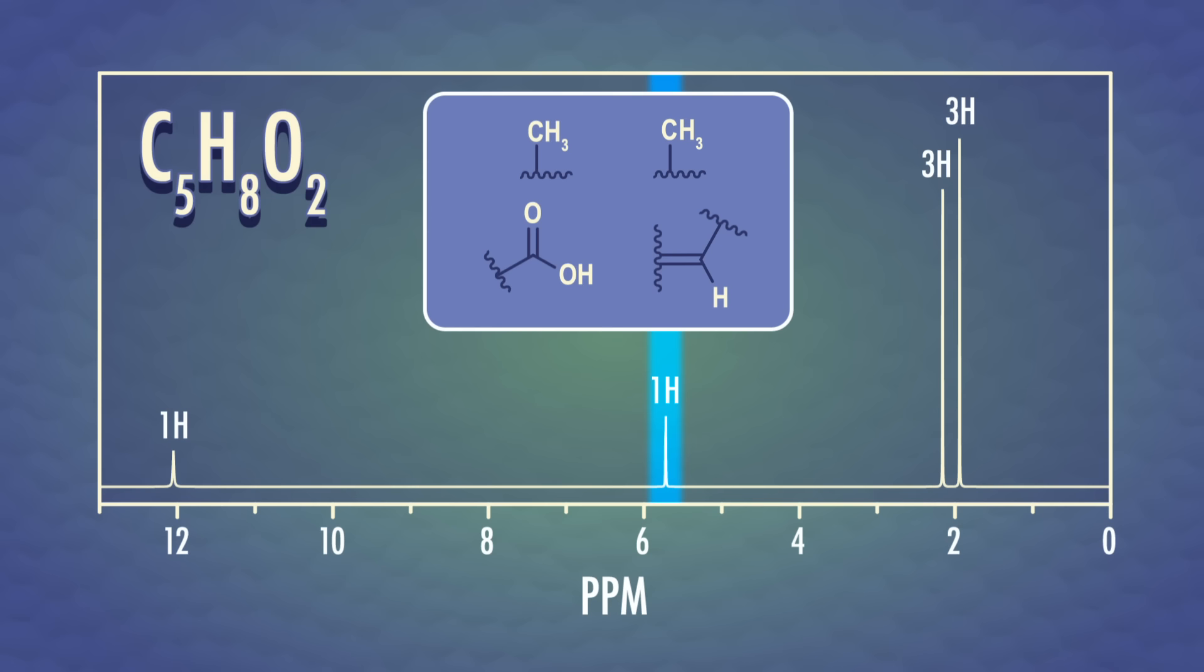To start, let's put the two CH3 groups on different sides of the alkene. Wait a second, though. With this structure, the methyl group is next to a carbon atom with a hydrogen. This would split a single peak into a doublet, and we'd expect the hydrogen atom to be split by the three hydrogens on the methyl too. Since we don't see splitting in the spectrum, let's rearrange our structure so the hydrogen atom in both methyl groups won't be split by any adjacent protons.